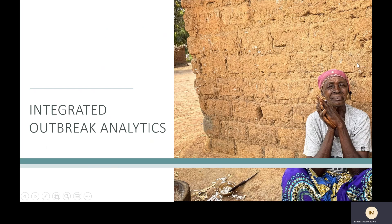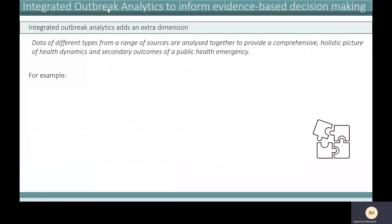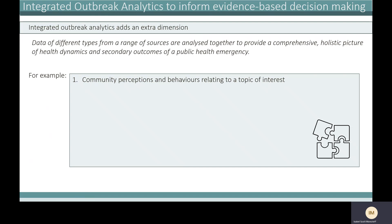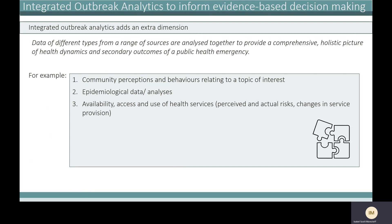Integrated outbreak analytics, IOA, is a process that adds an extra dimension to our understanding of what is happening during a public health emergency. We're bringing together data of different types from different sources and analyzing it together to provide a more comprehensive picture — including health dynamics and secondary outcomes. These sources could include data on community perceptions and behaviors, epidemiological data, and data on the availability, access, and use of health services.